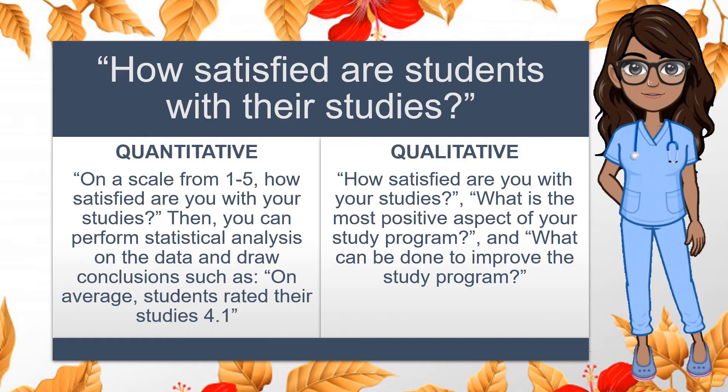In qualitative research, you may conduct in-depth interviews with 15 students and ask them open-ended questions such as: How satisfied are you with your studies? What is the most positive aspect of your study program? And what can be done to improve the study program? Based on their answers, you can ask follow-up questions to clarify things. Furthermore, you can transcribe all interviews and try to find patterns and commonalities.